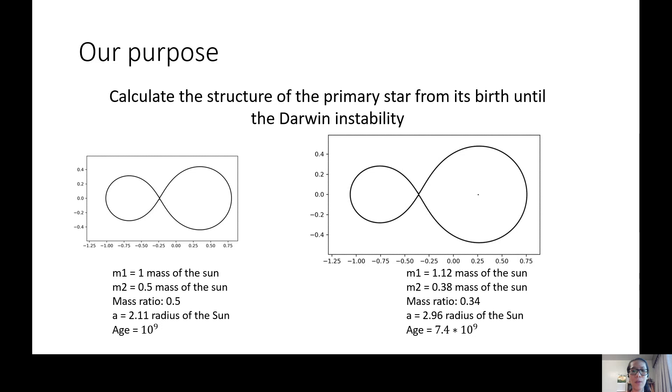We have developed a model of the birth, life, and death of binary stars over the years. This summer, we focused on the life of the contact binary star from its birth until the Darwin instability. To achieve our results, we calculated the structure of the primary star and how it evolves over time through nuclear burning.